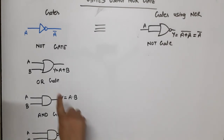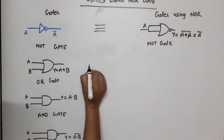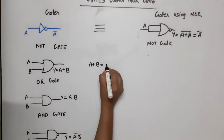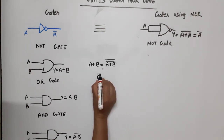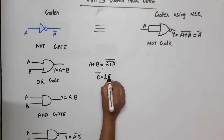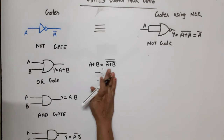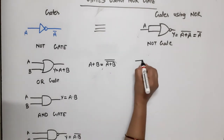Now let's do OR gate. OR gate output is A plus B bar — so we need to complement it twice. If zero is complemented we get one, complement again gives zero, the original. So we will take two complements.